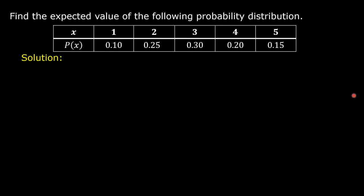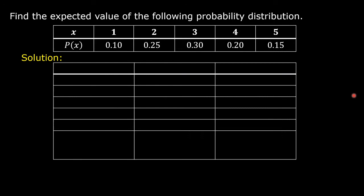Solution: construct a table with three columns. In the first column, write the specific values of the random variable represented by x: 1, 2, 3, 4, and 5.